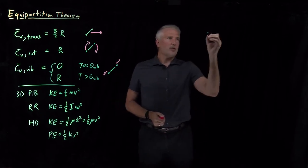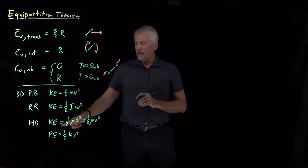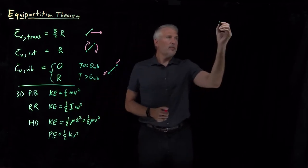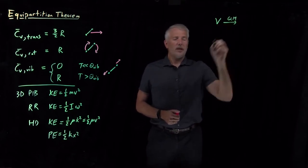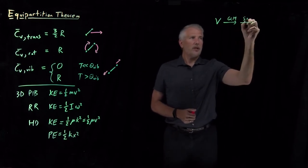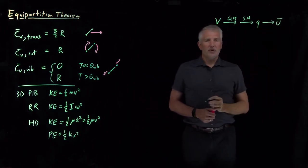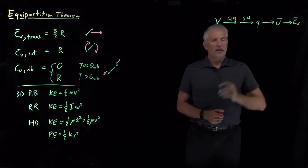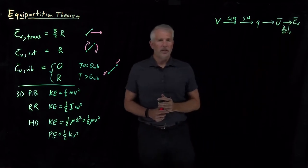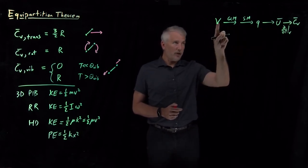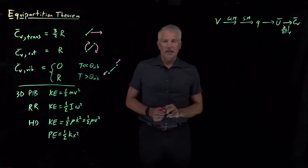Let's ask ourselves the general question, but first remind ourselves how we got heat capacities from statements of the energies of the system. We started by doing some quantum mechanics: if we define the potential energy of a system, we do quantum mechanics to get wave functions and energies, then statistical mechanics to get partition functions, then use thermodynamic connection formulas to get internal energy, and the heat capacity is the temperature derivative of the internal energy. We went through that work for the particle in a box, the rigid rotor, and the harmonic oscillator, ending up with a heat capacity in every case.